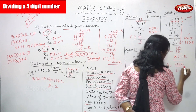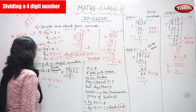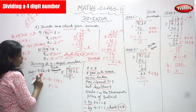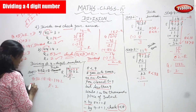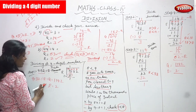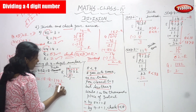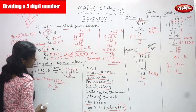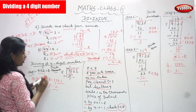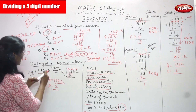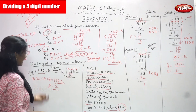So when you divide the four-digit number 9132 by the single digit number 8, you get quotient 1142 and remainder 2. But we need to verify whether the answer is correct or wrong using the check method.